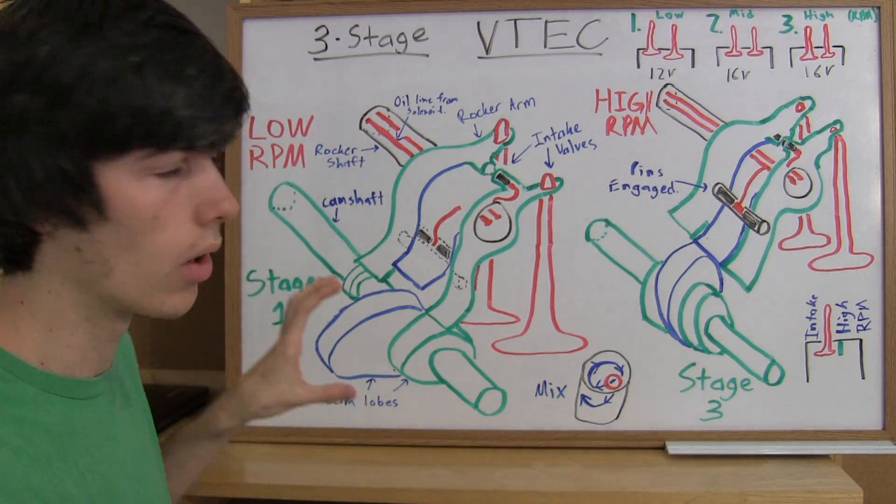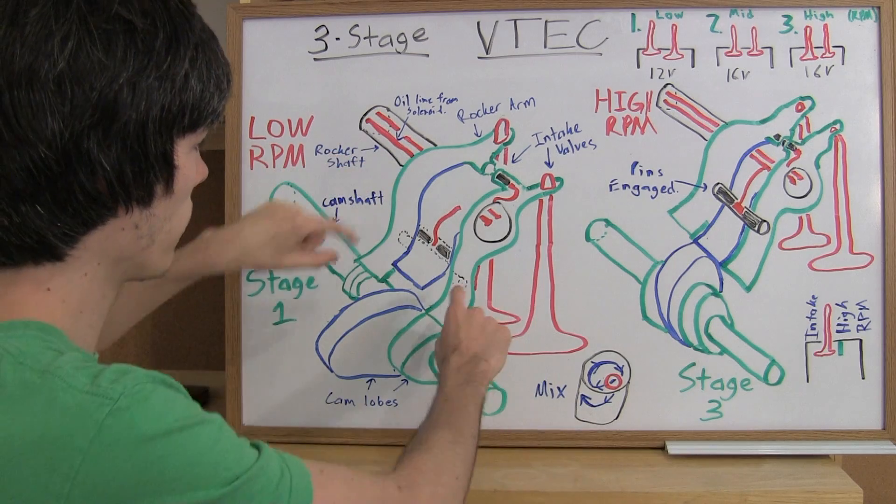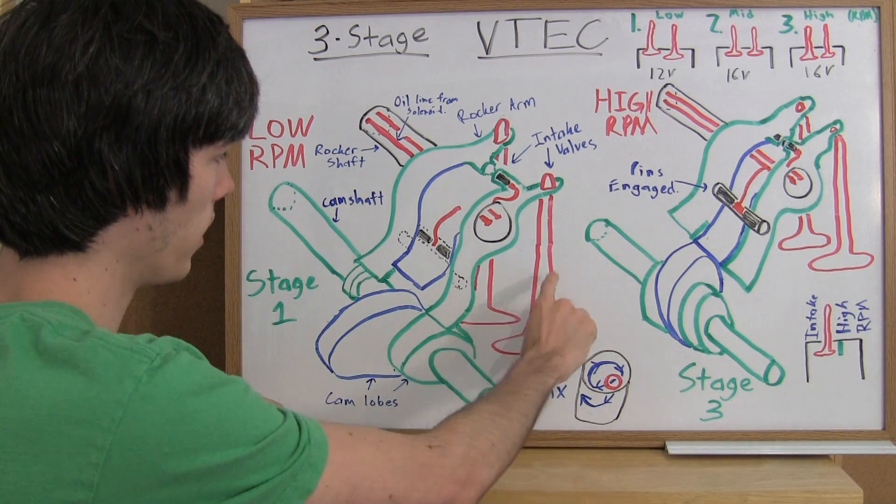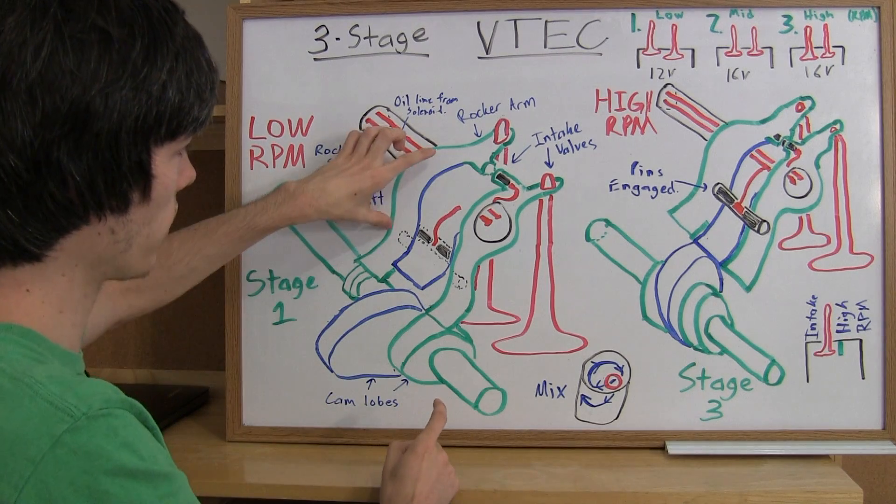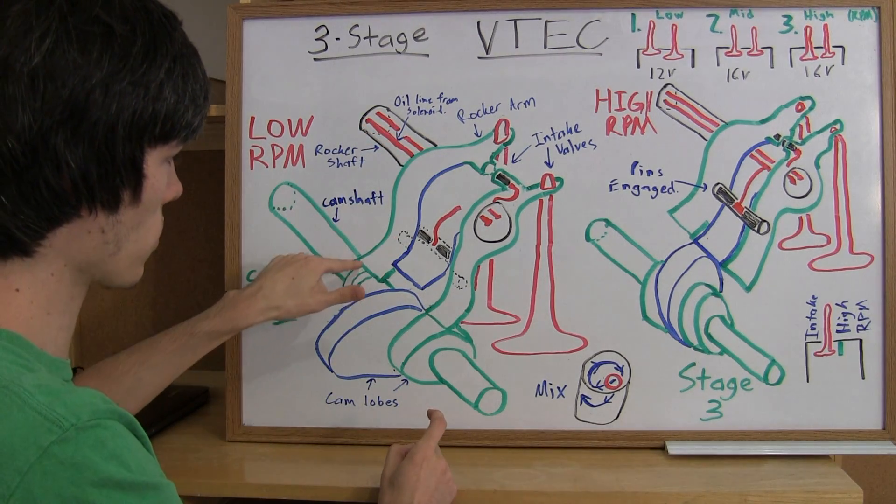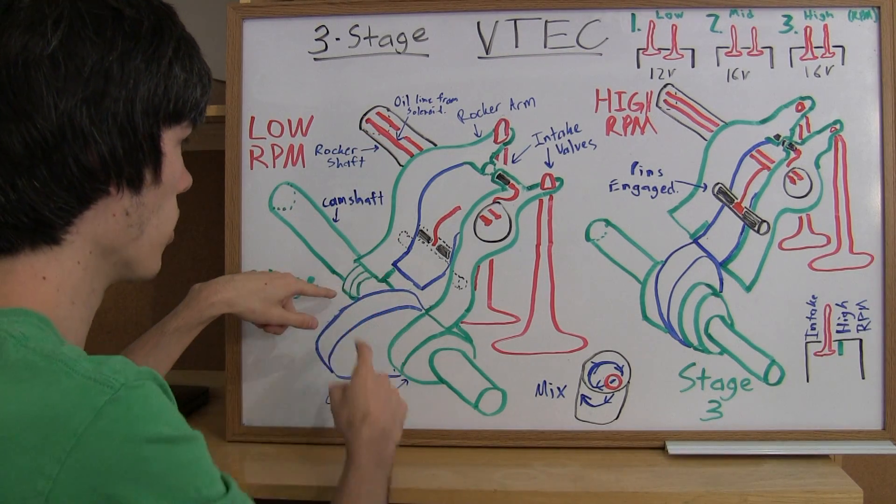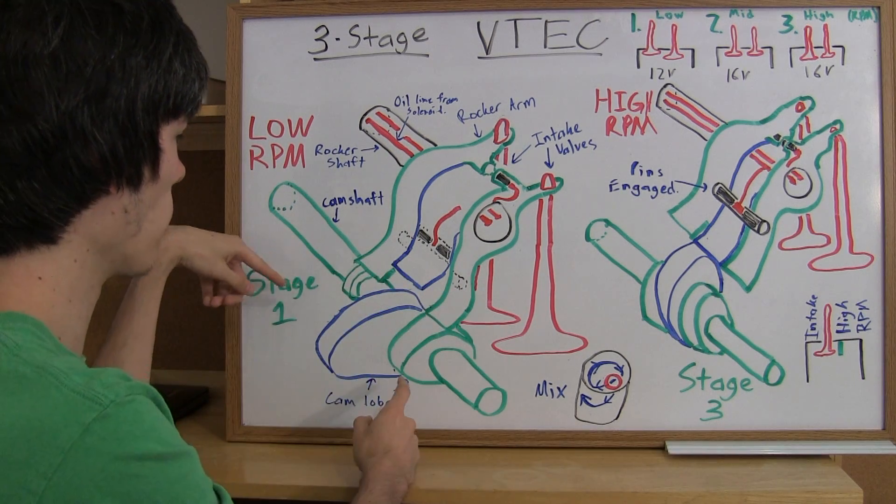When you're in stage one at low RPMs, you're going to have just this outside rocker arm operating. You can see that this one, this other rocker arm, is just on a circle here. It's not actually on a cam lobe so it doesn't open at low RPMs.